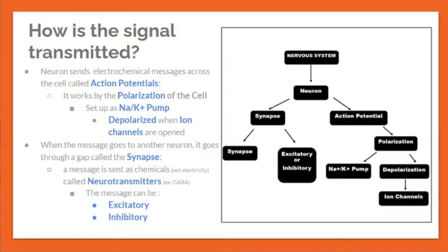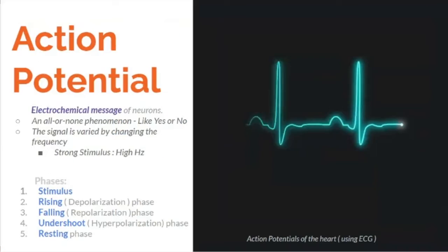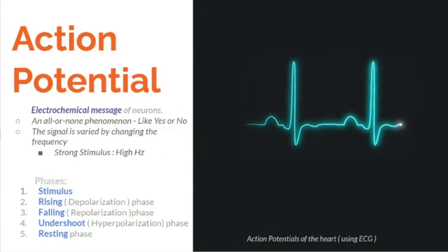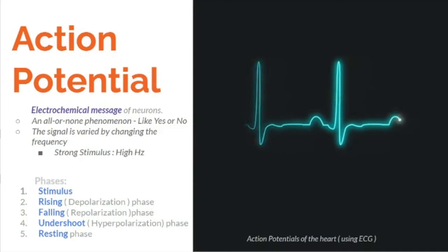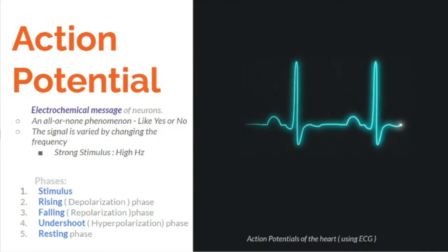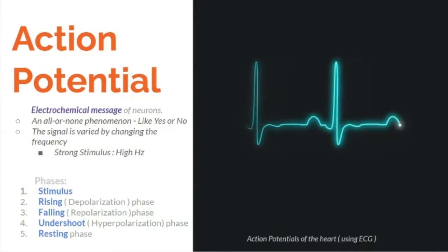When the message goes to another neuron, it crosses a gap called the synapse, where it is sent as chemicals called neurotransmitters. The message can be excitatory — meaning messages are passed on continuously — or inhibitory, meaning messages are stopped and cannot proceed. Action potentials are an all-or-none phenomenon, like yes or no. The signal strength is varied by changing the frequency — high hertz means a strong stimulus.